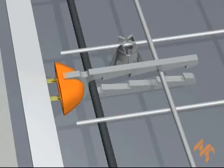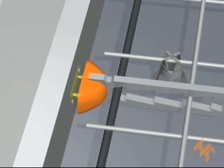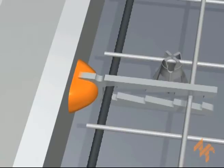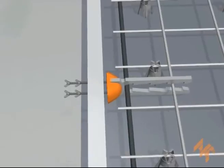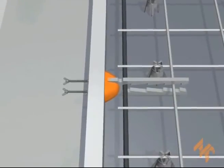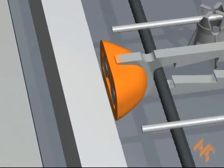Attach the void former securely to the side form with either the support plate, the setting bolts, or the magnets.